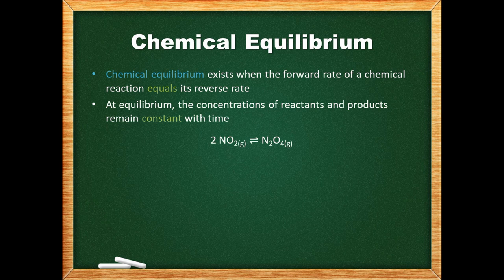An example of an equilibrium reaction is shown below. The coefficients in the balanced equation provide the consumption and production ratios. We can see that nitrogen dioxide is being consumed and produced at twice the rate dinitrogen tetroxide is.